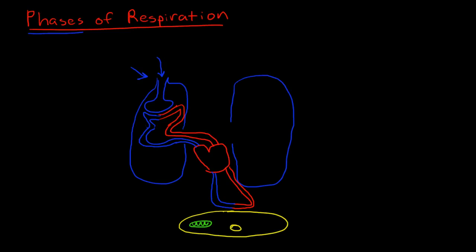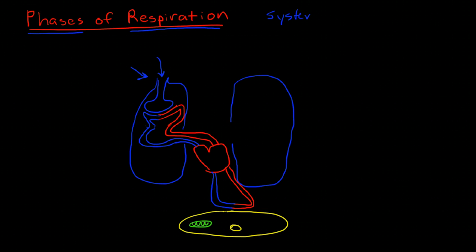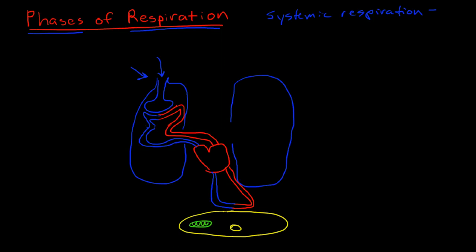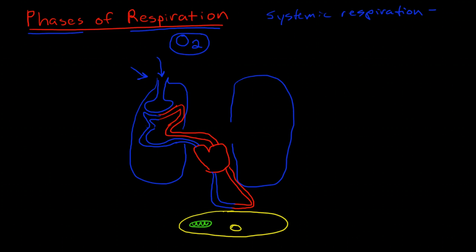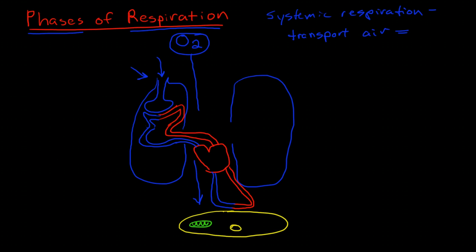So I want to start by defining the term respiration, and there are actually two definitions. The way we are using respiration here is what I would call systemic respiration. By systemic respiration I mean that it is the process of transporting oxygen from the external atmosphere down to the cellular level. So it's the process of transport from basically the air to the cells.